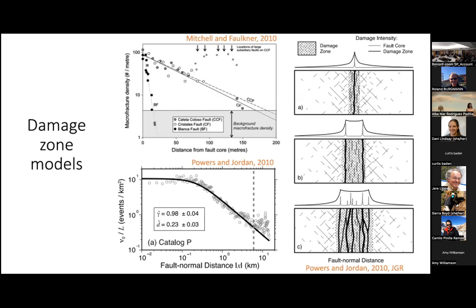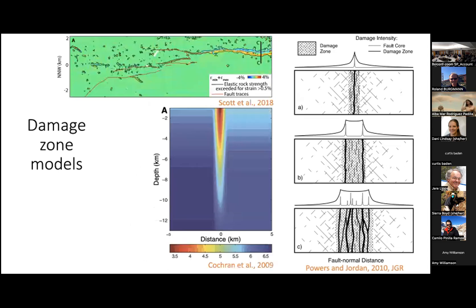Geologically, we define damage zones as the volume around the fault that is warped or fractured. And typically, fracture density will be highest next to the fault and decrease following some nonlinear relationship like a power law or an exponential decay until it reaches some sort of background - that's shown on the top plot there from some work by Mitchell and Faulkner. Seismologically, we sometimes define the damage zone as the volume where aftershock density decreases as we move away from the fault. That's pretty similar to the fracture density decrease, until that aftershock density reaches some sort of background. Geodetically, we talk about damage zones as a zone of decreased rigidity around the fault, or for earthquakes that are directly measured from imagery, we talk of damage zones as the area where the strain exceeds the elastic limit of the rock.